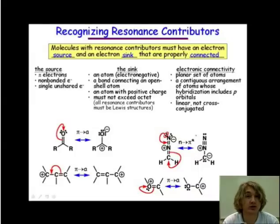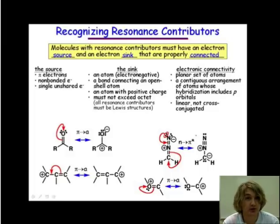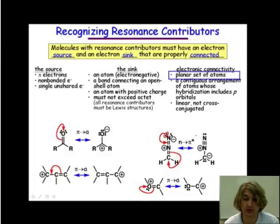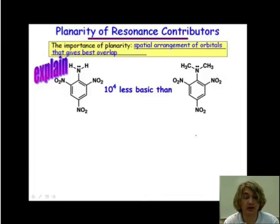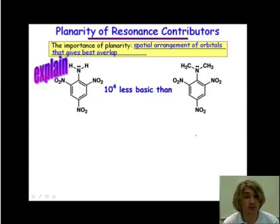In this webcast, we're going to be discussing recognizing resonance contributors. The first criterion we're going to look at is planarity. Planarity is important because the spatial arrangement of the orbitals involved need to have good overlap in order for resonance to occur.